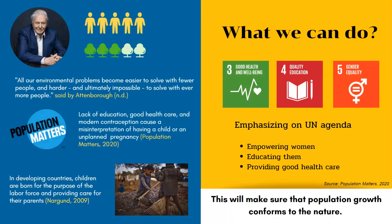There are also other perspectives on why we cannot achieve the United Nations goals by 2030. According to Etan Belaf, we cannot solve environmental problems easily if the total population does not correspond with nature. However, this is not to oppose human rights — rather, lack of education, good healthcare, and modern contraception lead to unplanned pregnancy. For example, in developing countries, children are born for labor and to provide care for parents. So what we can do is emphasize the UN agenda by empowering women, educating them, and providing good healthcare to ensure population growth conforms to nature.